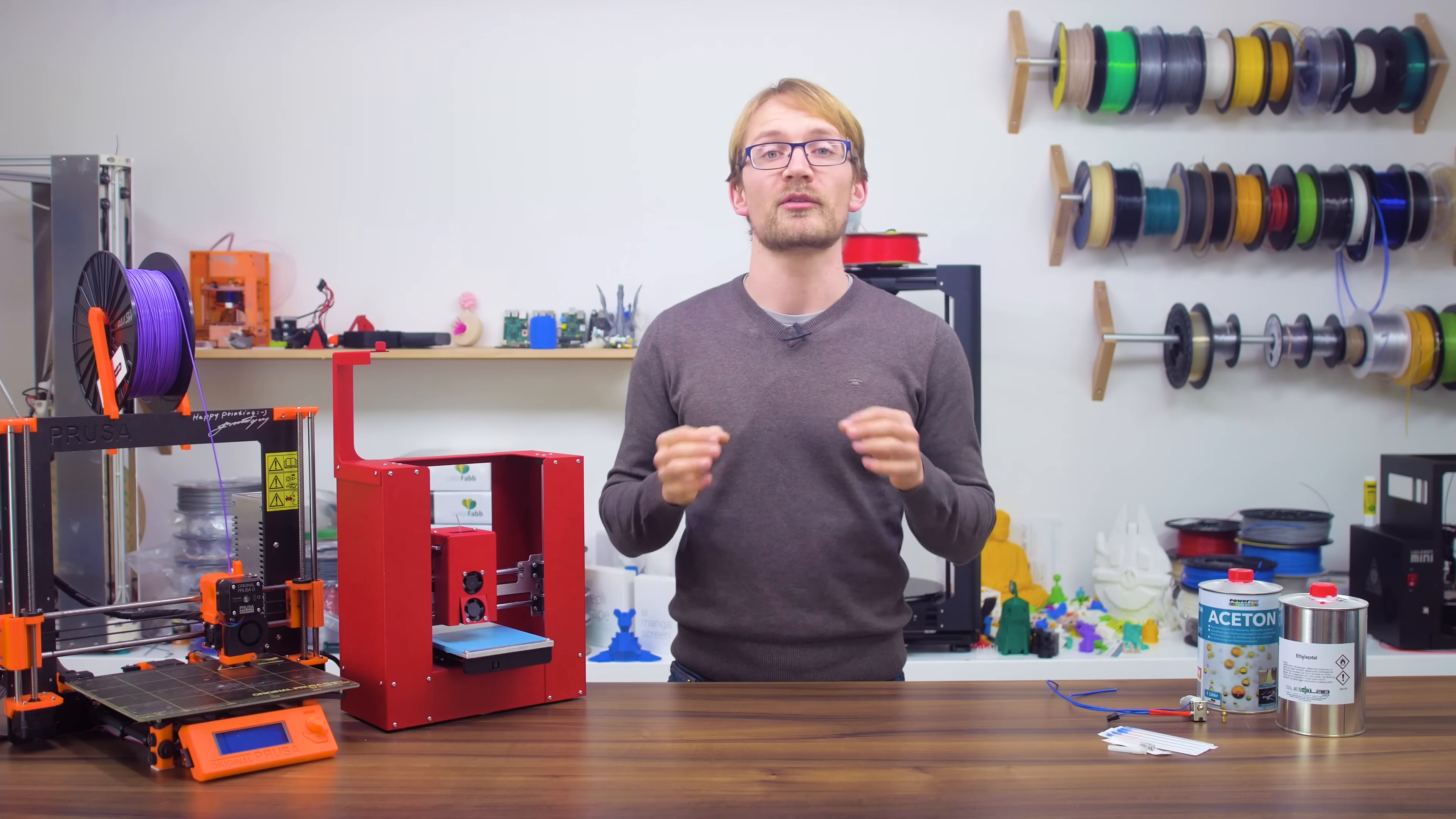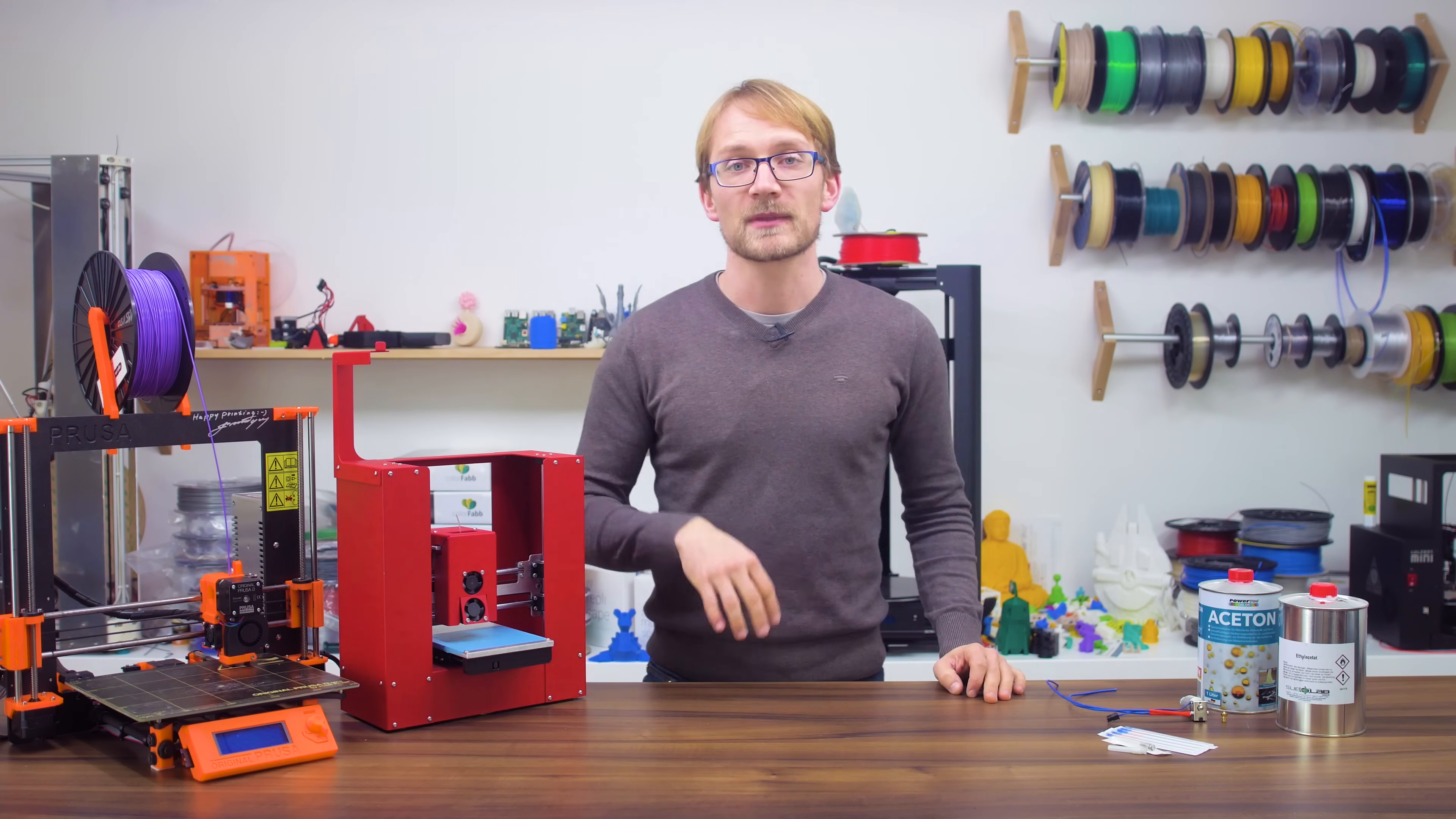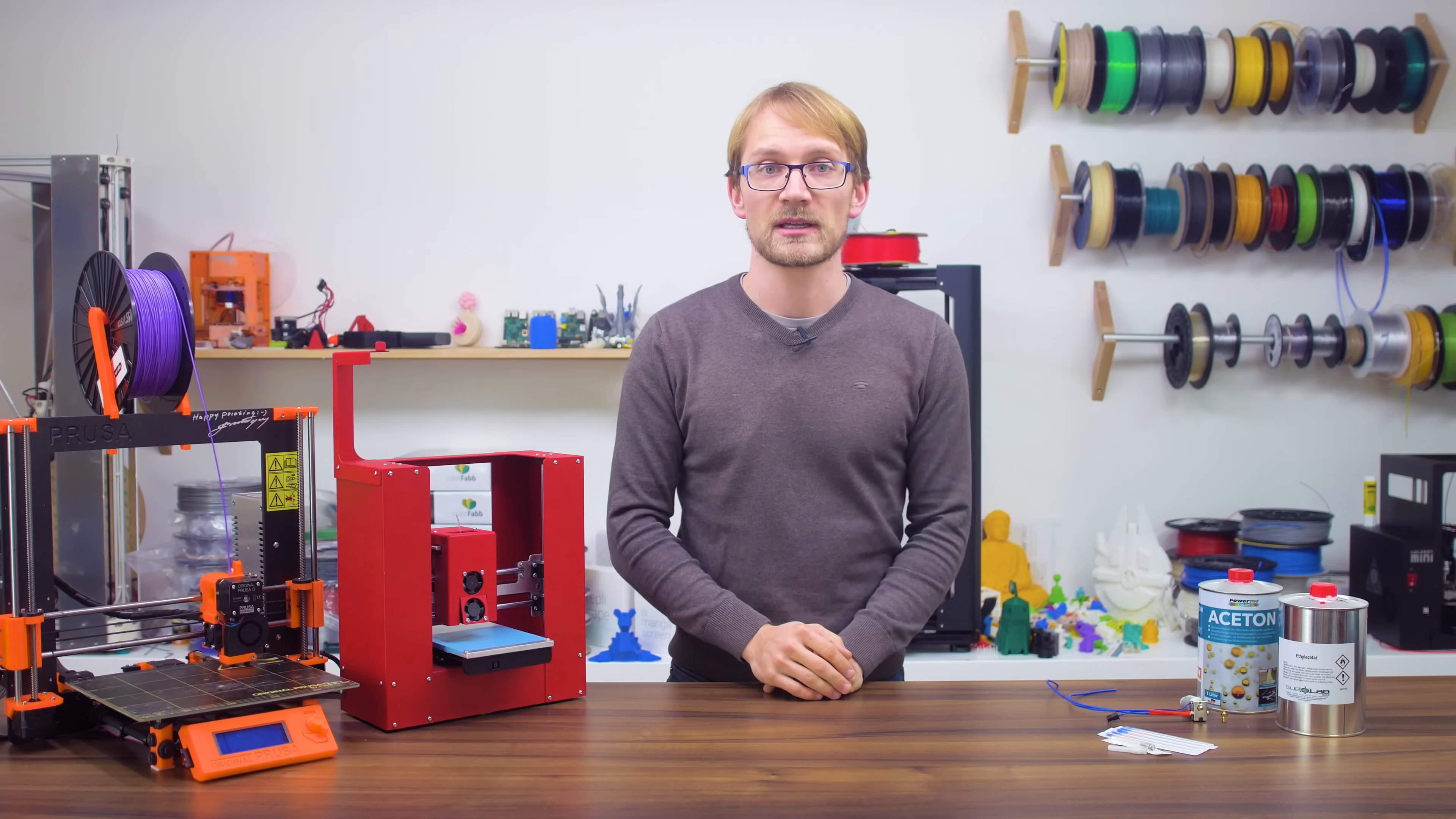Another way that I personally prefer over pushing needles up the hotend is to use a cold pull. Ultimaker calls this the atomic method, which is similar in concept. A cold pull works best with slippery, soft materials, so nylons like Taulman's Bridge filament.